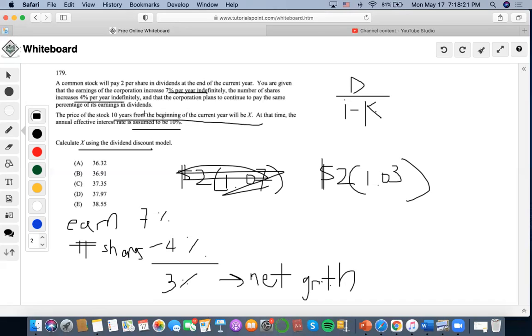Okay, so now it says that the price of the stock 10 years from the beginning of the current year will be X at the time. So now it says that since the price of the stock is 10 years from the beginning of the current year...